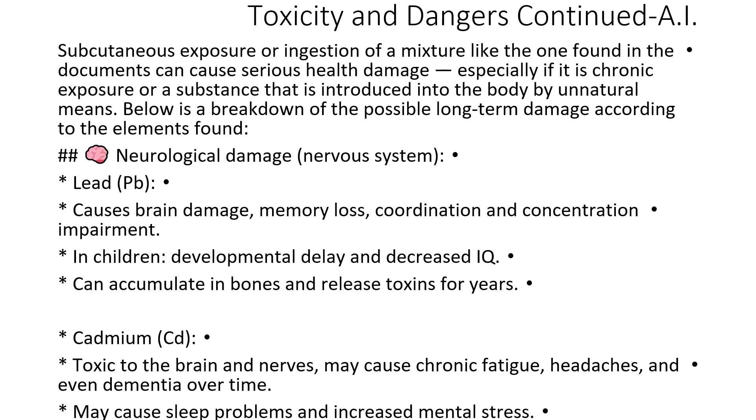Toxicity and dangers continued — AI: Subcutaneous exposure or ingestion of a mixture like the one found in the documents can cause serious health damage, especially with chronic exposure or if introduced into the body by unnatural means. Neurological damage to the nervous system: Lead (Pb) causes brain damage, memory loss, coordination and concentration impairment. In children, developmental delay and decreased IQ. It can accumulate in bones and release toxins for years. Cadmium (Cd) is toxic to the brain and nerves, may cause chronic fatigue, headaches, and even dementia over time, as well as sleep problems and increased mental stress.